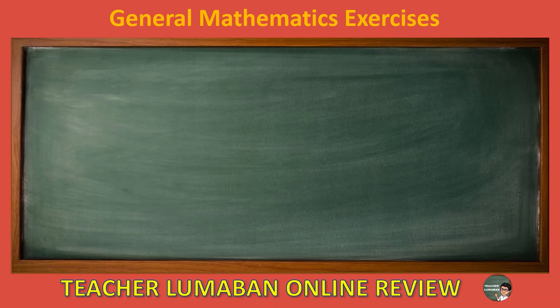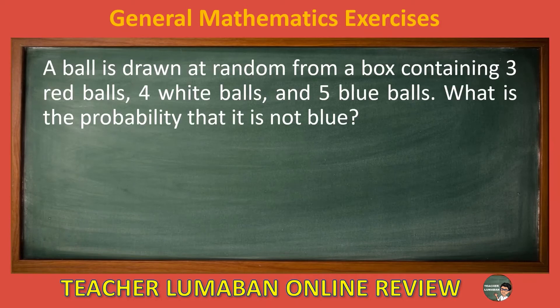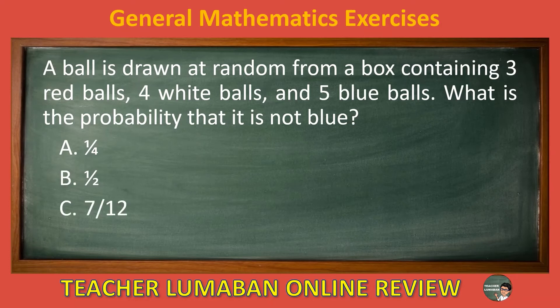A ball is drawn at random from a box containing 3 red balls, 4 white balls, and 5 blue balls. What is the probability that it is not blue? Letter A: 1/4. Letter B: 1/2. Letter C: 7/12. Letter D: 1. Choose the suitable answer based on the given choices in 5 seconds.